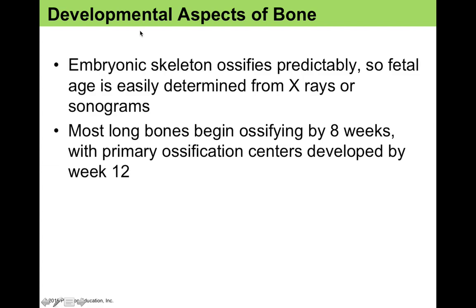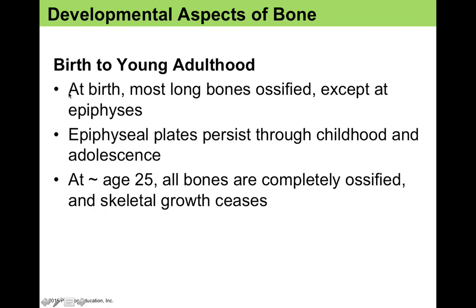In terms of developmental aspects of bone, we can make decent predictions about the rate of ossification. We can look at how bones have ossified to determine age by x-ray or sonograms, since ossification occurs so predictably. Most long bones begin ossifying by eight weeks, and primary ossification centers develop by week 12. At birth, most long bones are ossified except for the epiphyses, as secondary ossification centers begin growing later in fetal development but aren't fully formed at birth. The epiphyseal plates persist through childhood and adolescence as the site of interstitial bone growth or lengthening.